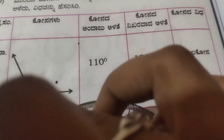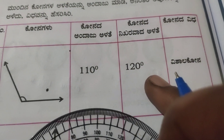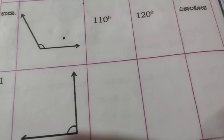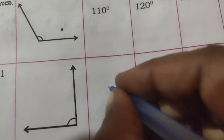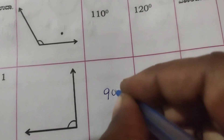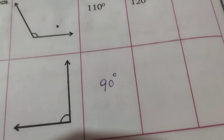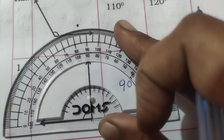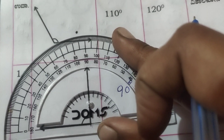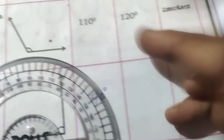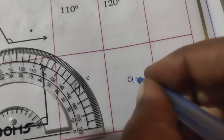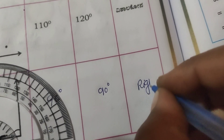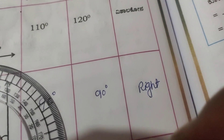The first angle is done as an example — it is exactly 90 degrees. The estimation and measurement are both the same. This is a right angle.